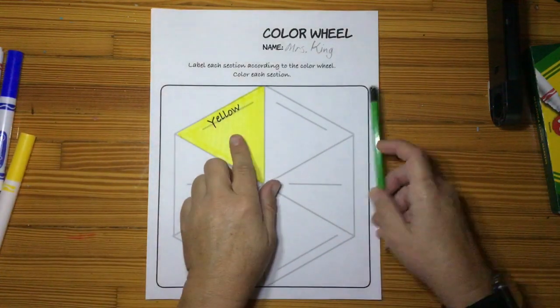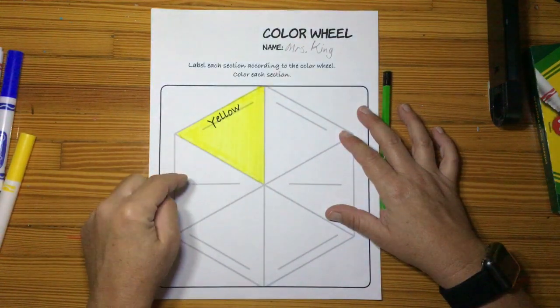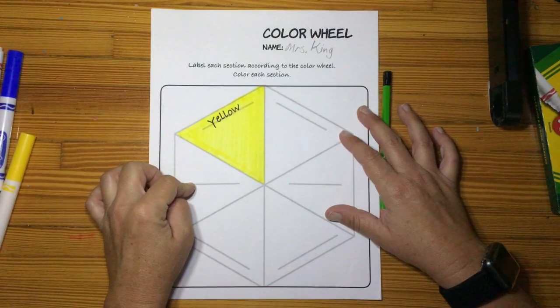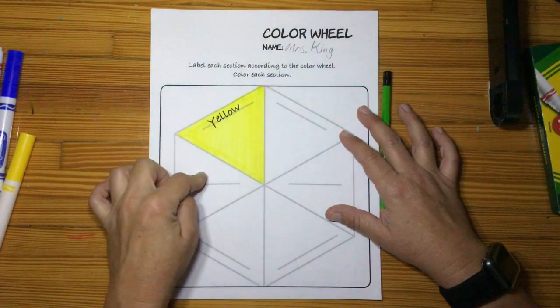Besides yellow, you'll have two spaces. Leave those blank right now. Don't do anything here.